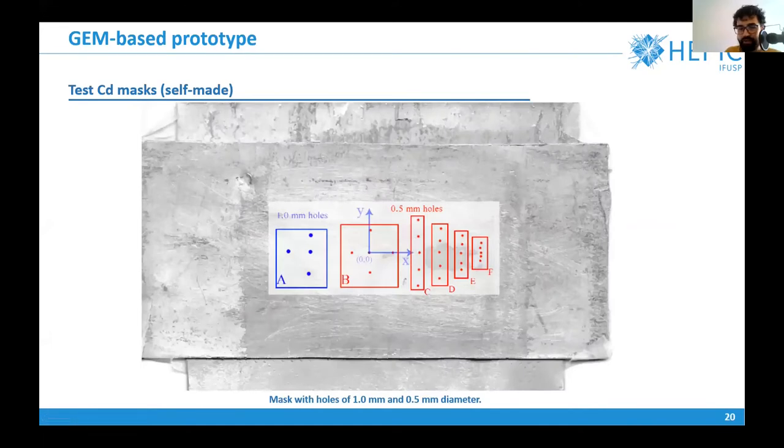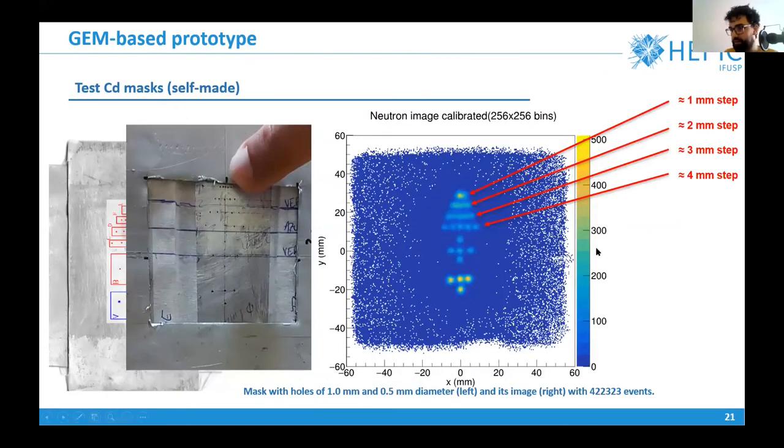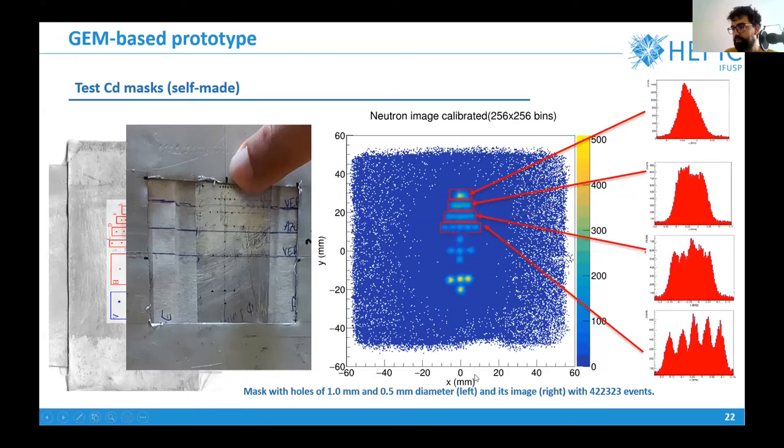We tried different shapes and disposals of these holes. With these different disposals here we have half millimeter holes. In these lines we have these half millimeter holes with different steps between each other. Here we have four millimeter steps and so on. If we plot the X profile of these steps, we can see that at some point we cannot distinguish anymore between the holes. So it gives us an idea about the spatial resolution of our detector.